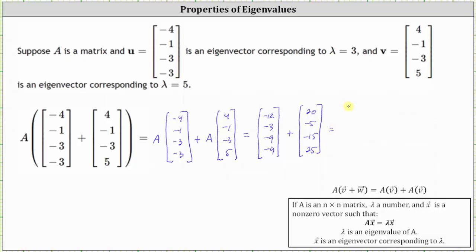From here, we just add the corresponding components. Negative 12 plus 20 is eight. Negative three plus negative five is negative eight. Negative nine plus negative 15 is negative 24. And negative nine plus 25 is equal to 16. So matrix A times the sum of vectors U and V is equal to the vector eight, negative eight, negative 24, 16.